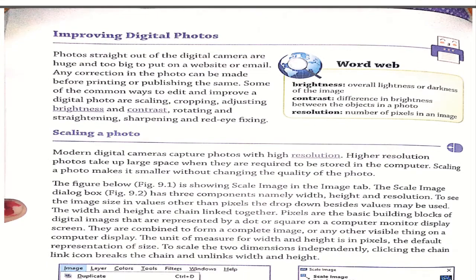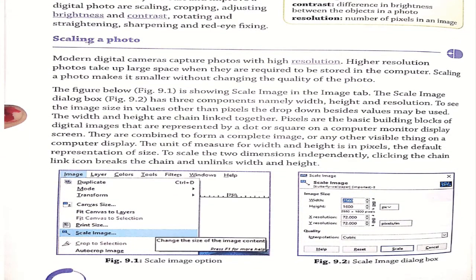The first part is scaling a photo. Modern digital cameras capture photos with high resolution, and higher resolution photos take up larger space — for example, a 4MB or 5MB image. To manage this, you can adjust components like width, height, and resolution to see the image size. You can set these values to compress the image, which is known as scaling. Scaling the image means setting its resolution, which reduces the space it occupies on your device.